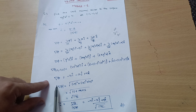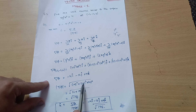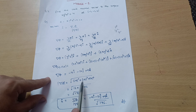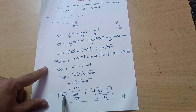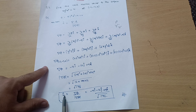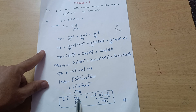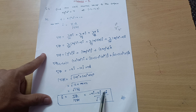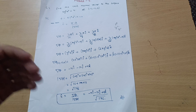Now we calculate |∇φ| = √((-4)² + (-12)² + 4²) = √(16 + 144 + 16) = √176. Therefore the unit normal vector n̂ = ∇φ / |∇φ| = (-4î − 12ĵ + 4k̂) / √176. This is the final answer for this question.